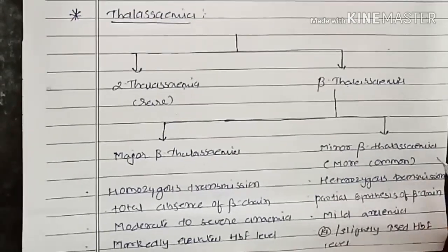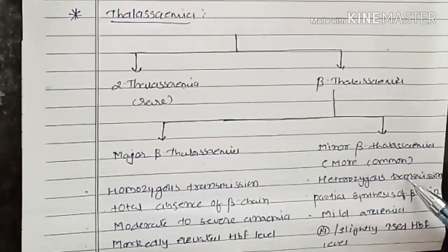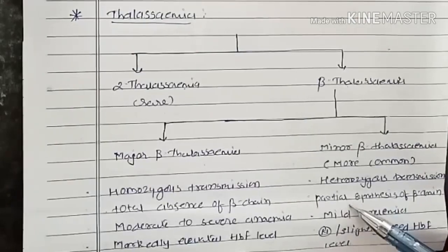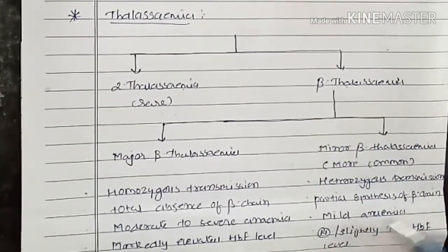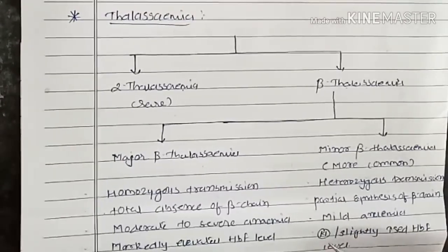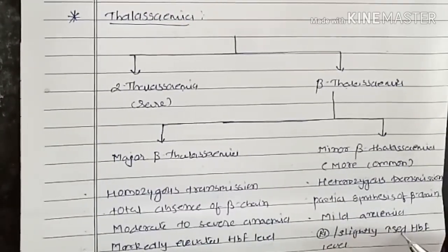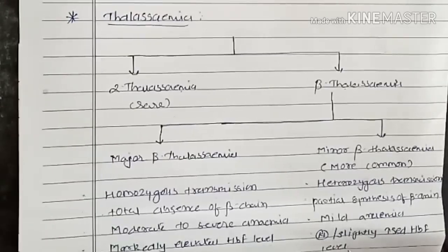In minor beta thalassemia, there is heterozygous transmission and partial synthesis of beta chain. It causes mild anemia and normal or slightly raised HbF level is found.